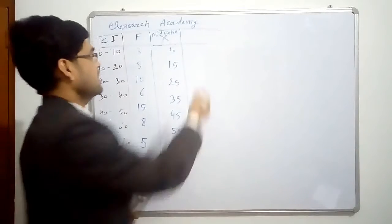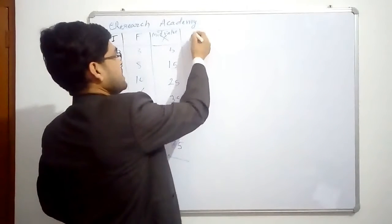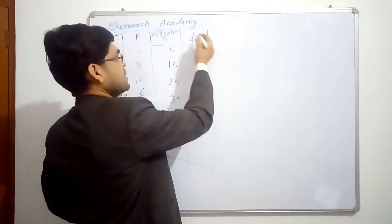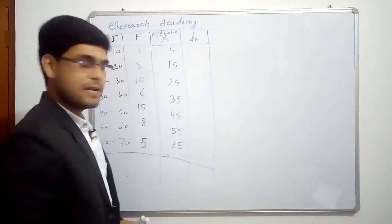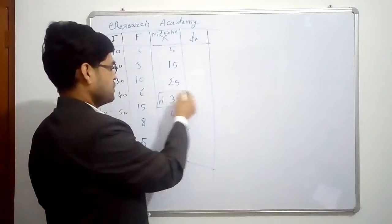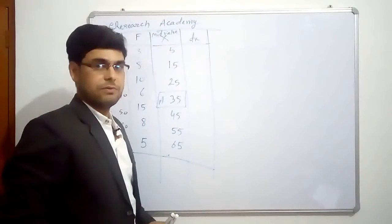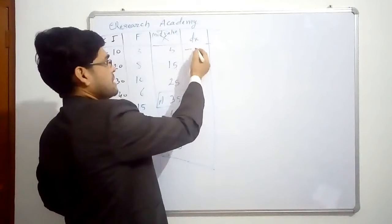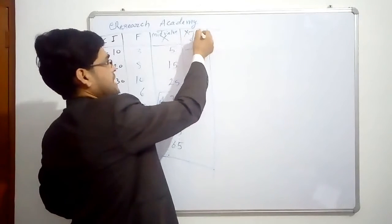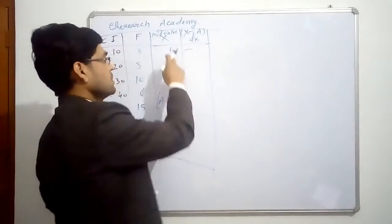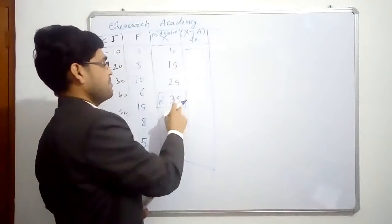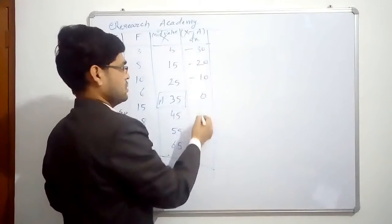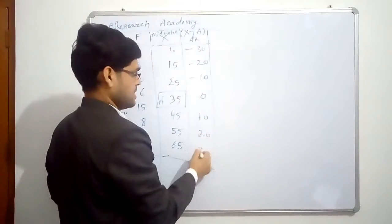Next we need dx. So dx is nothing, it is just deviation from assumed mean here. Let us say we have an assumed mean that is 35. So x minus 35. This is minus 30, minus 20, minus 10, 0, 10, 20 and 30.